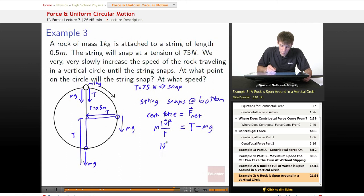So v squared m over r equals 75 minus 1 times 9.8, which equals... hold on, sorry. So 75 minus 1 times 9.8. We move things around some more.